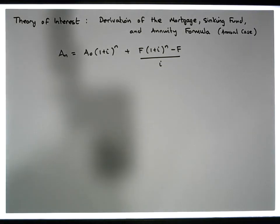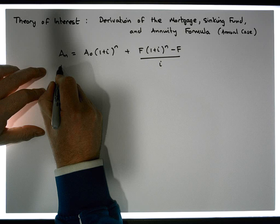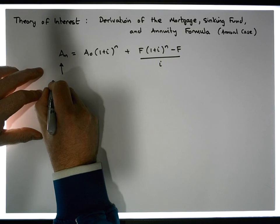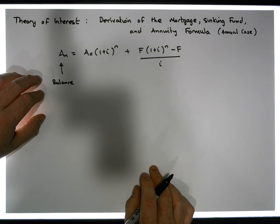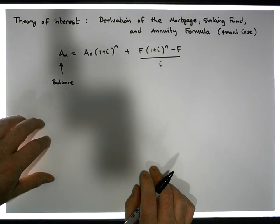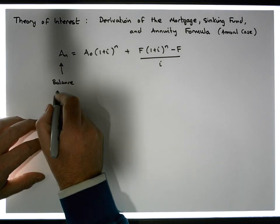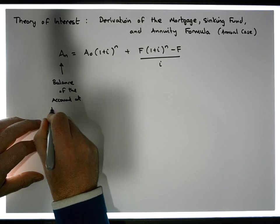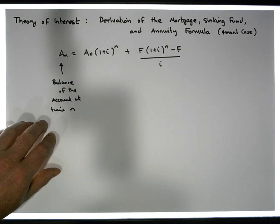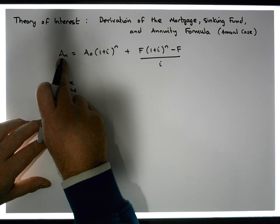The formula looks quite complicated, but the way I like to think about it is in parts. An is the balance — I like to consider this formula to be a representation of a bank account with a number of forces acting on it. At any moment in time, An is the balance of the account at time n.